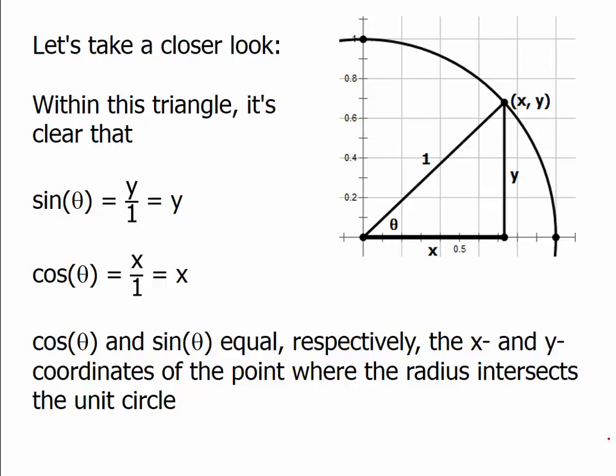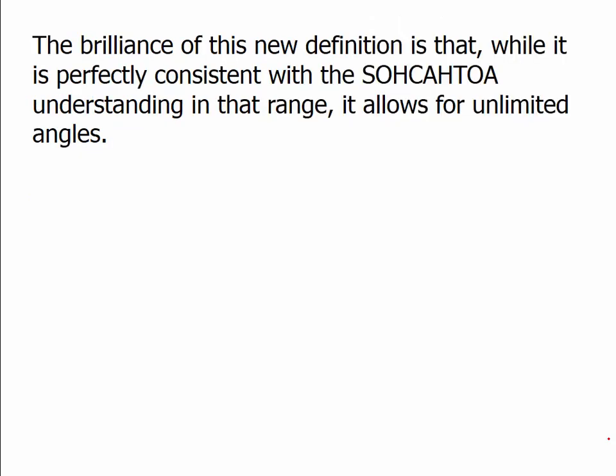In this system, sine and cosine are no longer defined merely in terms of opposite and adjacent — they're defined in terms of the point where that radius intersects the unit circle. The x-coordinate is the cosine and the y-coordinate is the sine. The brilliance of this new definition is that while it is perfectly consistent with the SOHCAHTOA understanding within that range, this new definition allows for unlimited angles.